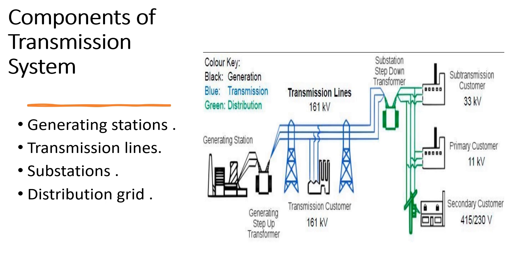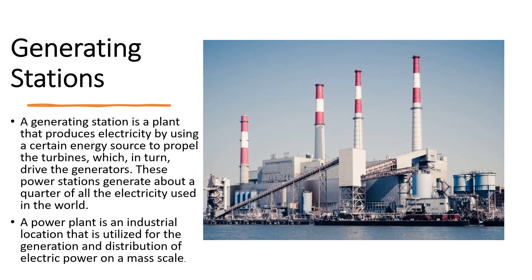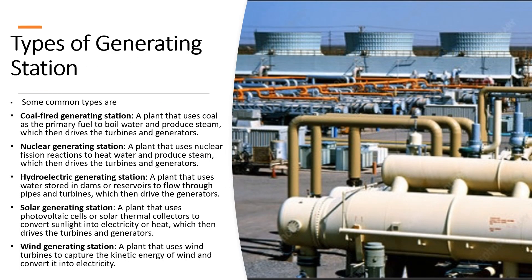A generating station is a plant that produces electricity by using a certain energy source to propel the turbines, which, in turn, drive the generators. These power stations generate about a quarter of all the electricity used in the world. A power plant is an industrial location utilized for the generation and distribution of electric power on a mass scale. Some common types of generating system are: coal-fired, nuclear, hydroelectric, solar, and wind generating stations.